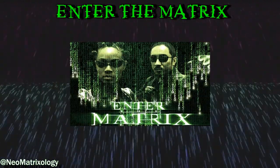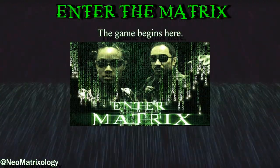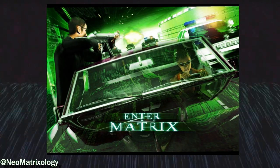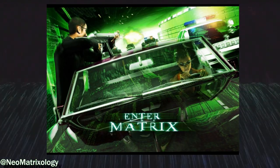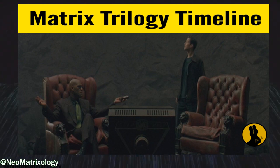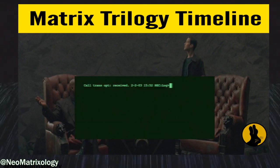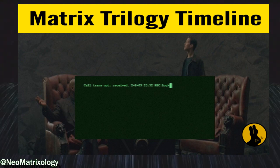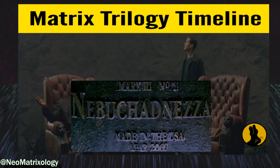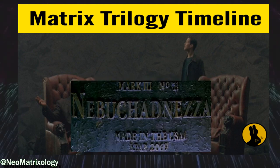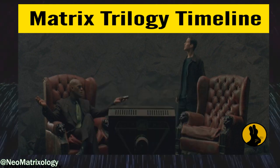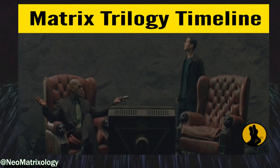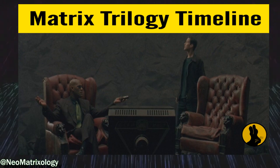Enter the Matrix — the game begins here. The Enter the Matrix game itself takes place just before and throughout the Matrix Reloaded film. In the Matrix Trilogy Timeline Explained video, you can see the different timestamp clues that are found within the different forms of Matrix media and get an idea of when these events could have taken place along the real-world timeline. I'll leave a link in the pinned comment for anyone who wants to check out the previous timeline video.